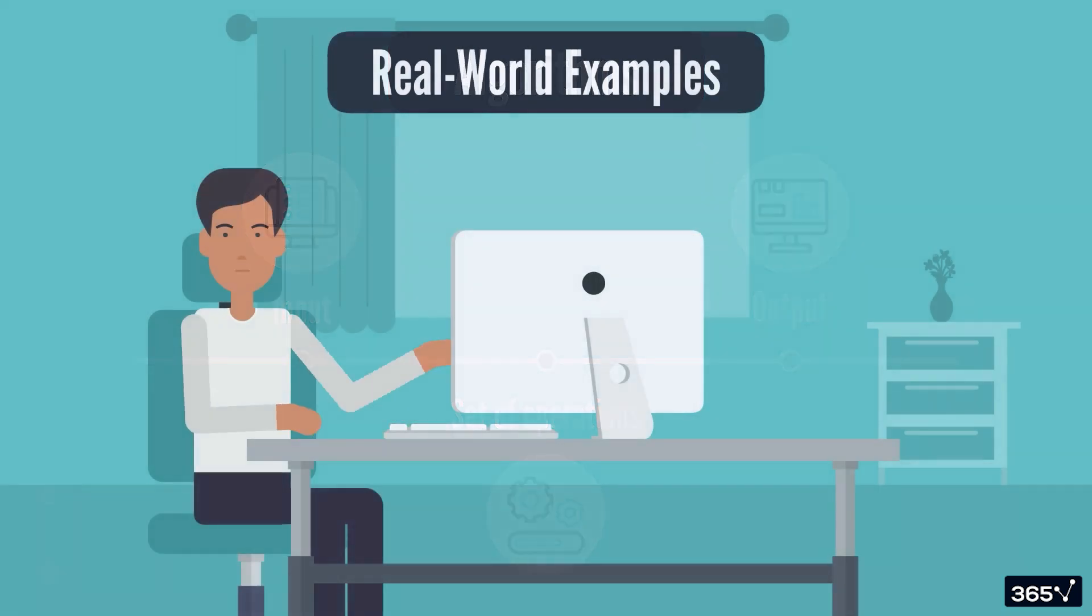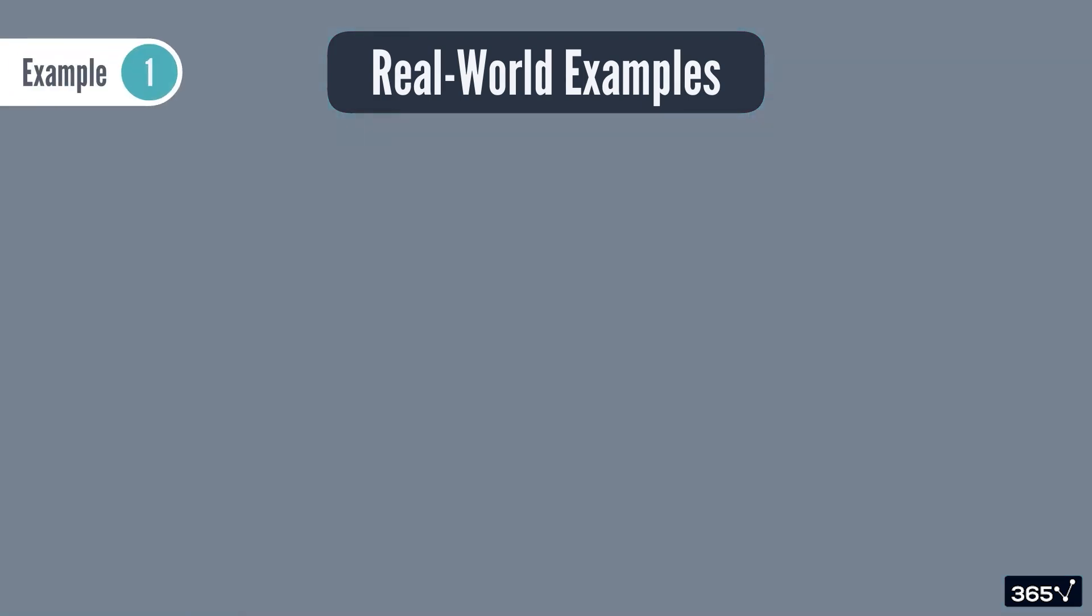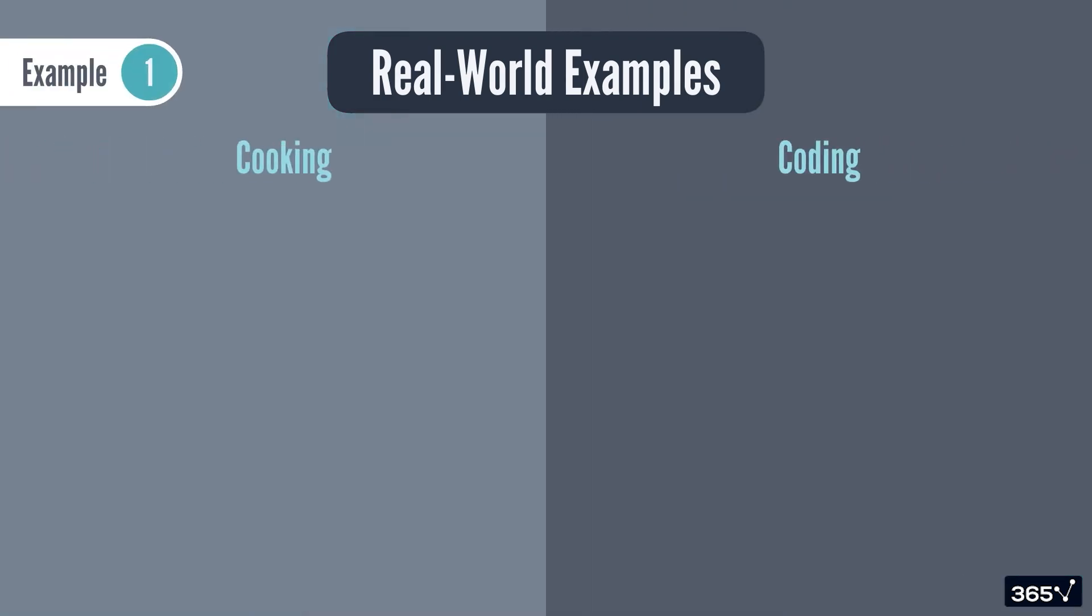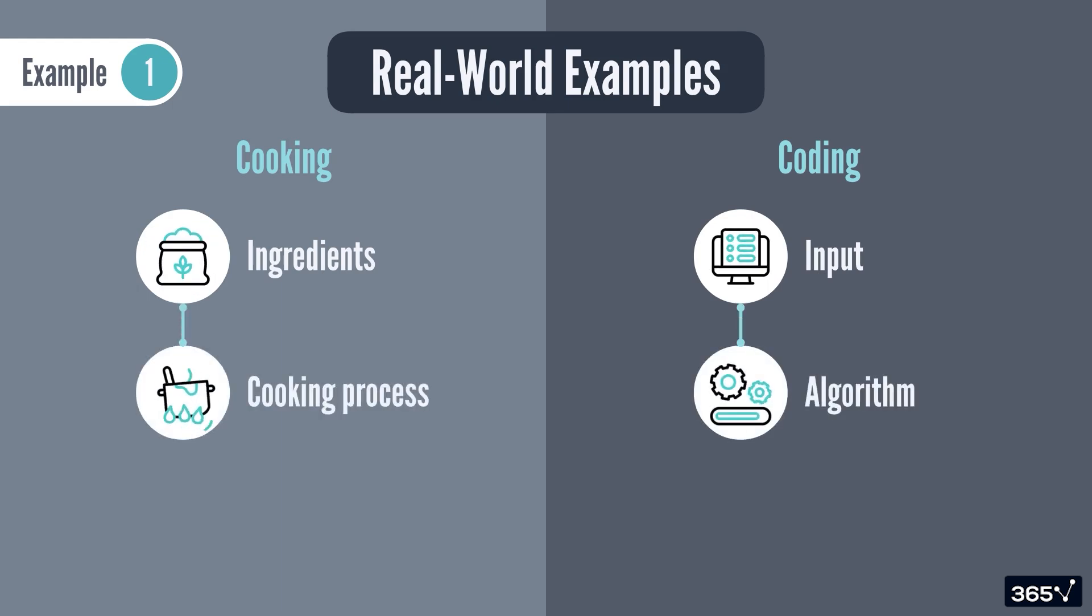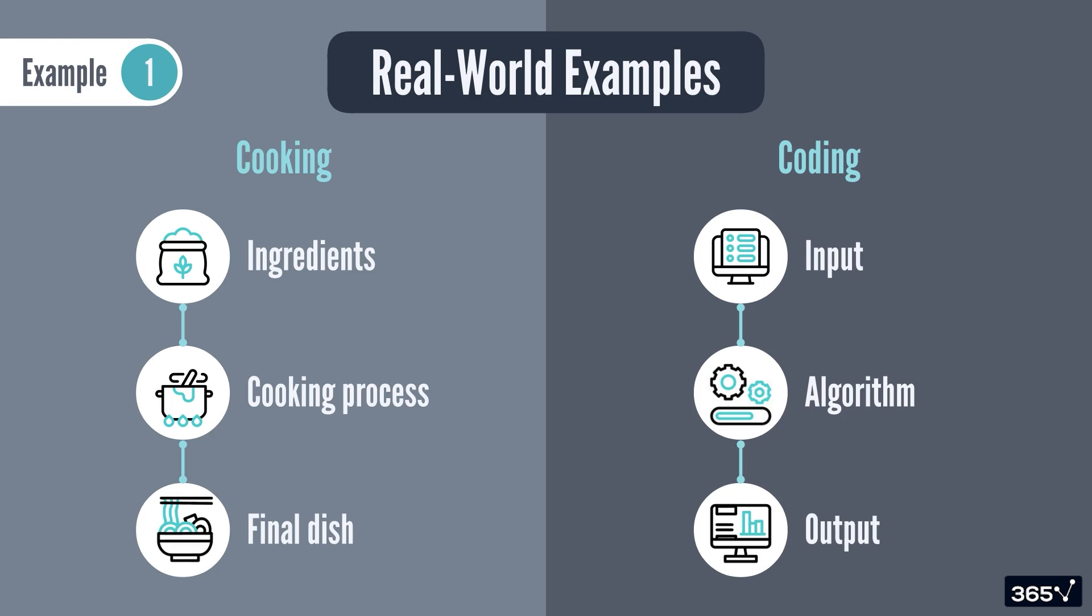We use algorithms in everyday life, even when we don't realize it. Here are some examples. Example one: A recipe provides step-by-step instructions to prepare a dish. The ingredients are the input, the cooking process is the algorithm, and the final dish is the output.